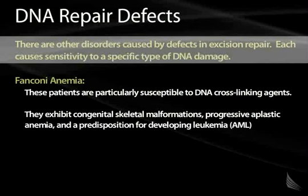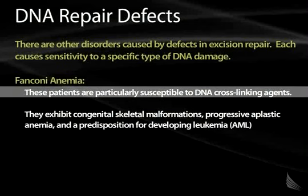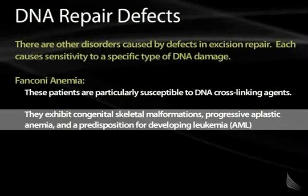There are other disorders caused by defects in excision repair. Each causes sensitivity to a particular type of DNA damage because it affects enzymes responsible for repairing that type. An example is Fanconi's anemia, found in patients particularly susceptible to DNA cross-linking agents — chemicals that cross-link DNA and lead to mutations. In addition to this susceptibility, patients exhibit congenital skeletal malformations, progressive aplastic anemia, and a predisposition for developing leukemia, particularly acute myeloid leukemia (AML).